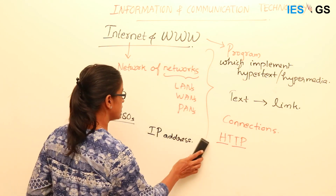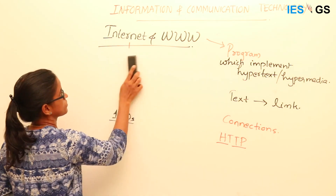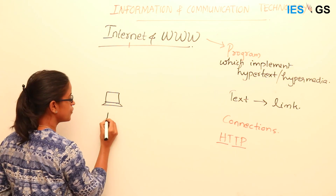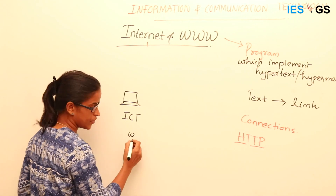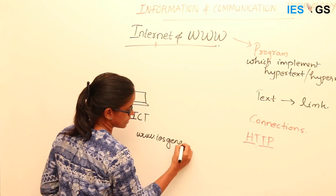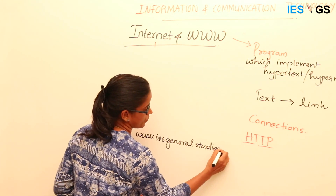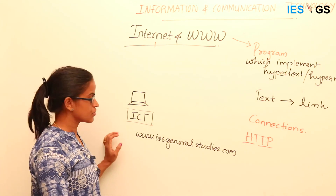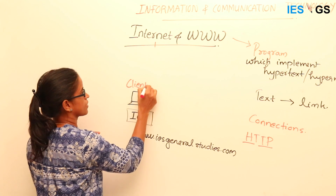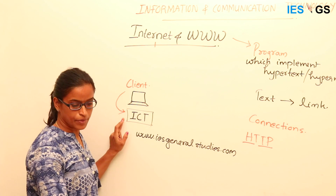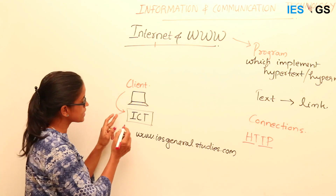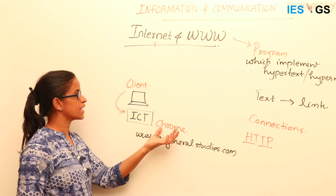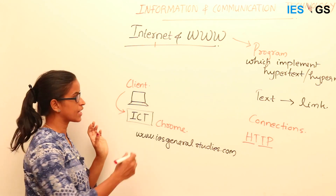Let us explain through an example. Imagine you are sitting with your PC and searching for ICT on a website — say www.isgeneralstudies.co. You want to see an ICT article, so you type ICT in the search bar. This is the client. The client here means the browser you are using — say Chrome. This request from the client will go to the server.